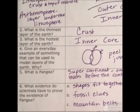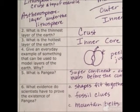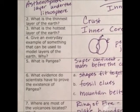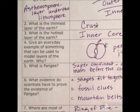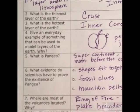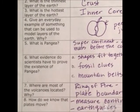Number two: what is the thinnest layer of the earth? That is the crust. It seems pretty thick to us, but compared to the other layers it is the thinnest. Number three: what is the hottest layer of the earth? That would be the inner core. Remember, the deeper we go down underneath the surface, the higher the temperature, the warmer it gets.